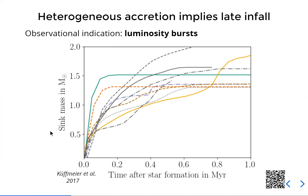An observational indication for this heterogeneity is that you see luminosity bursts. So even for stars that are, say, a few years old — that should, according to classical models, have low luminosities — they actually have quite significant luminosities. These can be explained by events of enhanced accretion. You can see this in a plot from our 2017 paper, showing the evolution of sink mass as a proxy of stellar mass based on a large-scale magnetohydrodynamic model of the giant molecular cloud. Objects with similar stellar masses after about a million years can have very different accretion profiles — in some cases accreting all their mass within just 100,000 years, while in other cases significant accretion and infall can occur at a later stage.